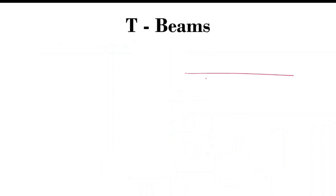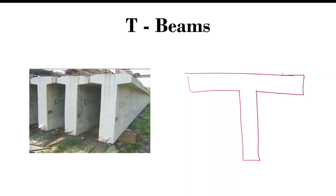The next type is T-beams, where the cross-section of the beam represents the letter T. T-beams are used in combination with reinforced concrete slabs.